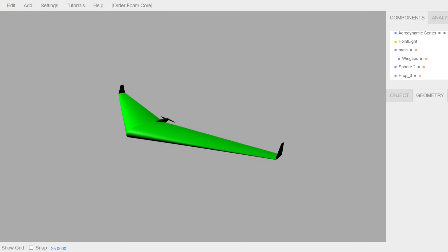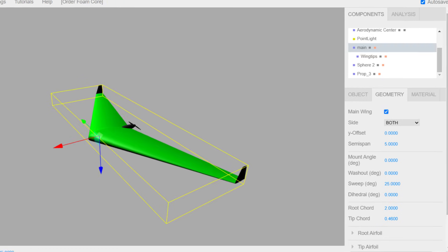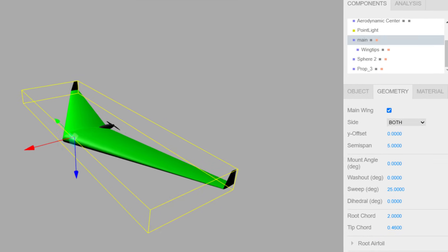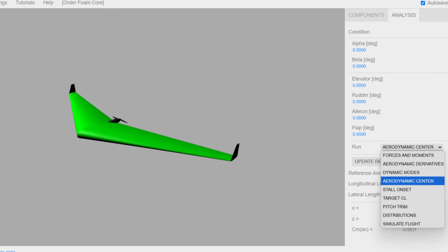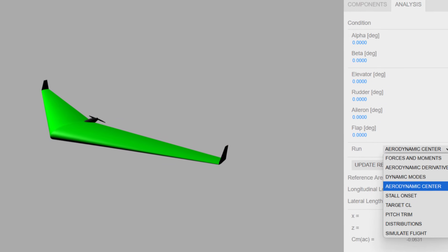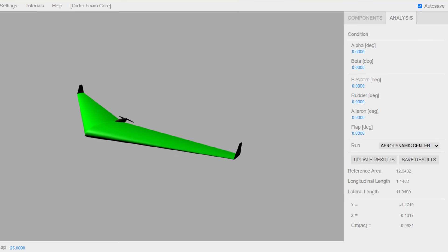Another quick way to estimate the neutral point of your flying wing design is to use mock-up. Mock-up is a free online tool for designing and analyzing aircraft aerodynamics. Just adjust the parameters based on your design, then go to the Analysis tab and choose the Aerodynamic Center option, and click on Update Results.